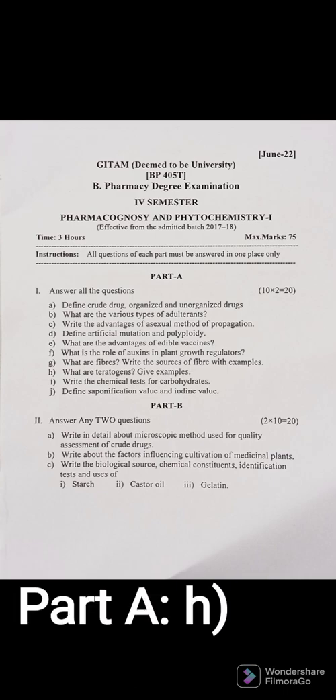Question 1H: What are teratogens? Give examples. Teratogens are any agents that disrupt the baby's growth when exposed during pregnancy. Examples include alcohol, smoking, toxicants, chemicals, radiation, and viruses which can damage fetal growth in the uterus.